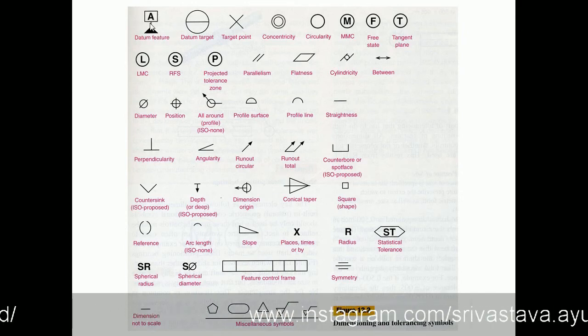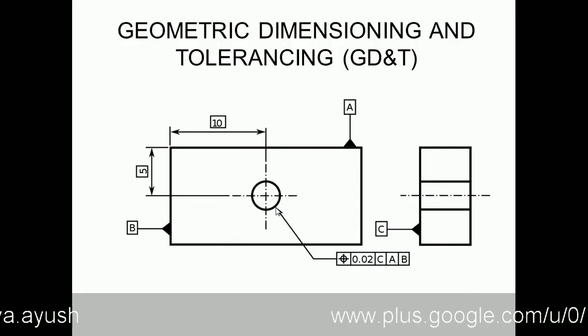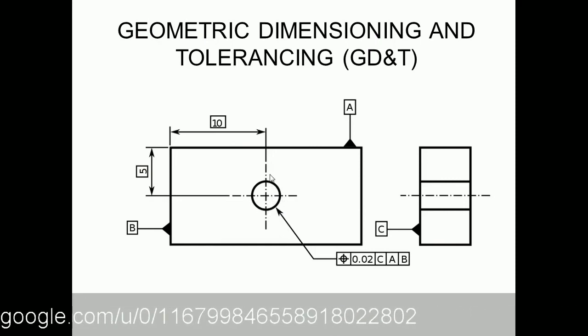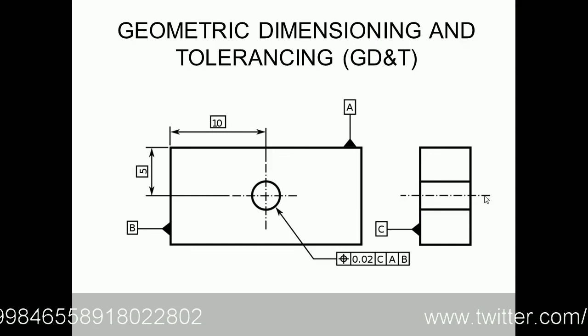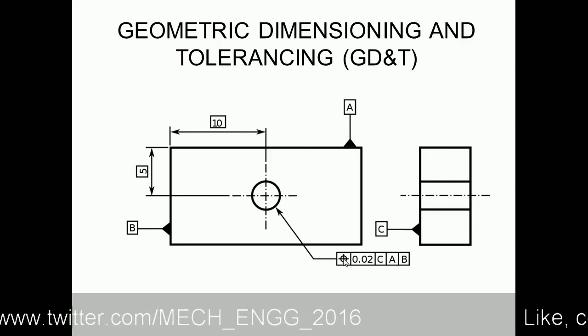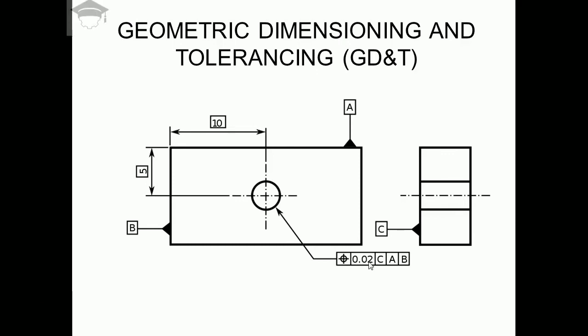For a particular part, this is the hole being drilled throughout. As you can see from the side view, first we write the position symbol, 0.02 is the tolerance, and C, A, and B are the datums. C is the datum, A is the top surface, and B is the side surface.